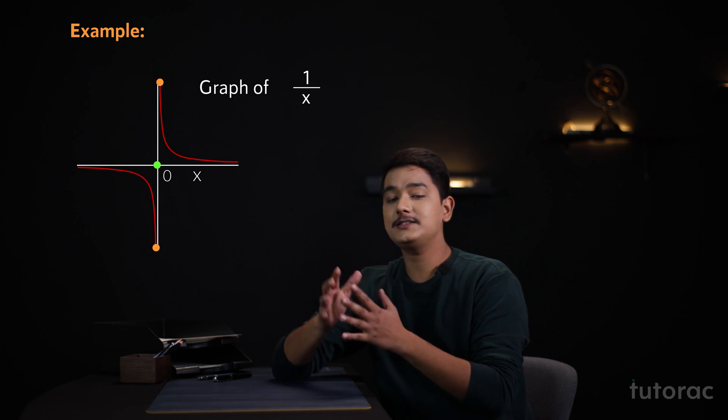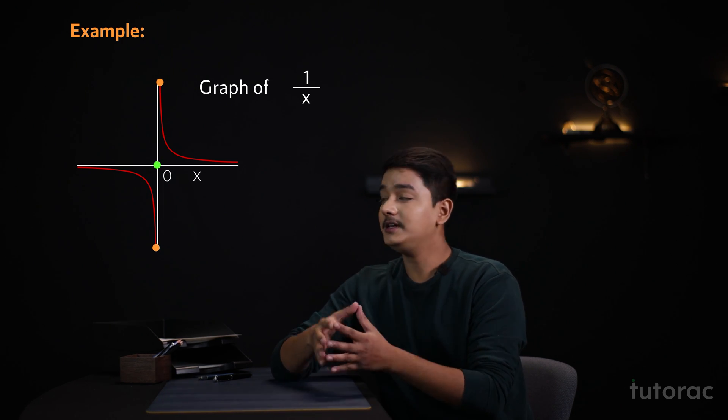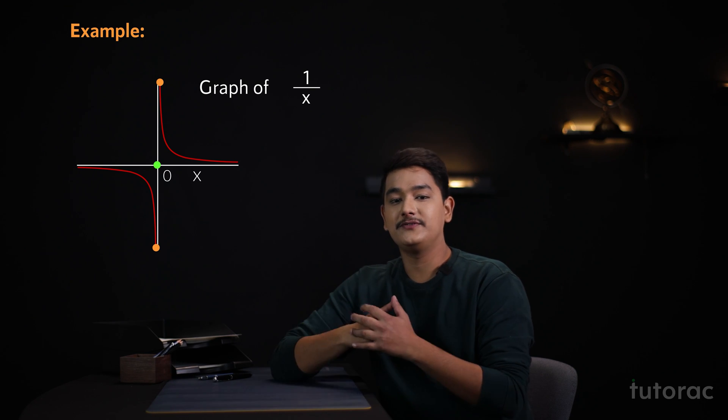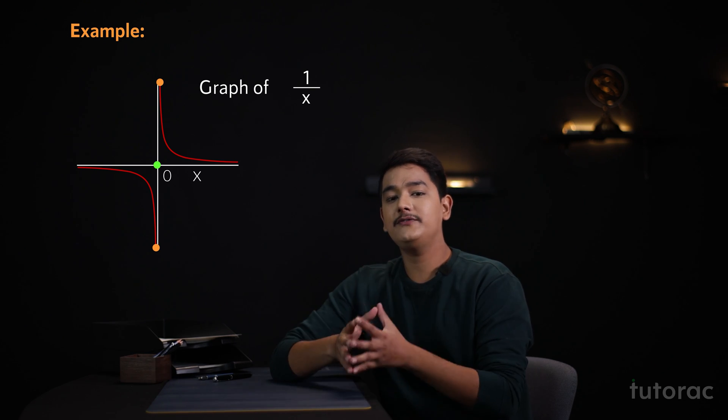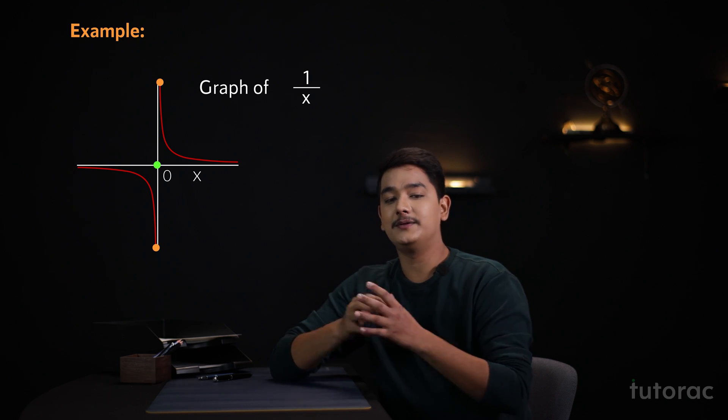And once the x is approached to 0, then 1 by x can be taken as infinity. I hope you have understood why infinity is referred as an undefined number.